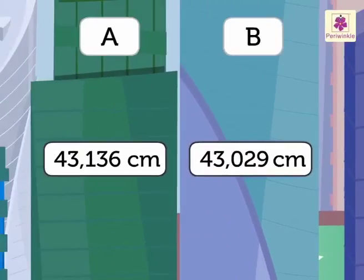We begin by comparing the digits in the 10,000th place, that is 4 and 4. The digits are equal here. So, we compare the digits in the 1,000th place, that is 3 and 3. These digits are also equal. So now, we will compare the digits in the 100th place, that is 1 and 0.